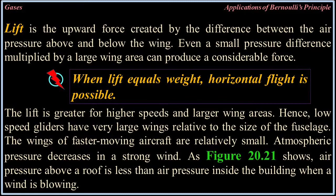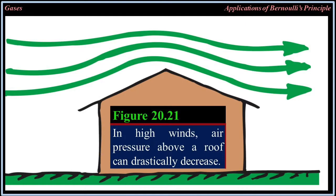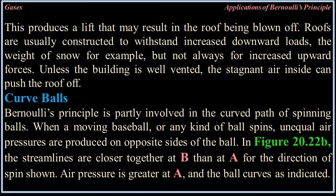Atmospheric pressure decreases in a strong wind. As figure 20.21 shows, air pressure above a roof is less than air pressure inside the building when a wind is blowing. In high winds, air pressure above a roof can drastically decrease. This produces a lift that may result in the roof being blown off. Roofs are usually constructed to withstand increased downward loads — such as the weight of snow — but not always for increased upward forces.